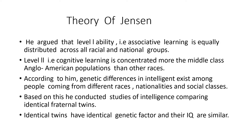According to his theory, Level 1 ability — associative learning — exists in all people, in all races and in all nations. When it comes to Level 2, that is cognitive learning, he says that it is more prevalent in white people than other races. White students scored better than other races.